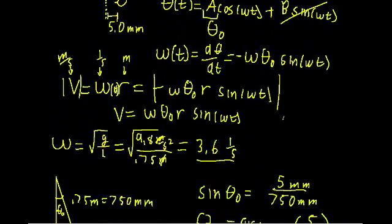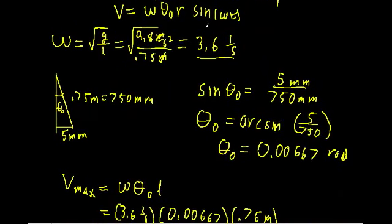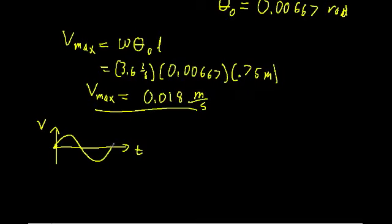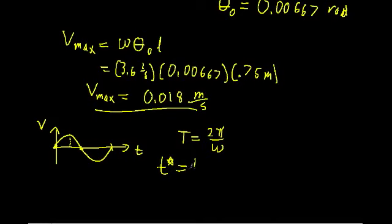Now we need to find the time when maximum velocity is first reached. V(t) is a sine function — starting at 0, rising to 1, back to 0, down to −1, back to 0 for one complete oscillation over one period T = 2π/ω. The first maximum occurs at one quarter of the period. So T* = T/4 = (1/4)·(2π/ω) = π/(2ω).